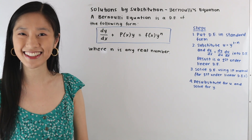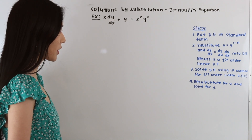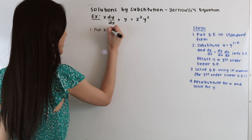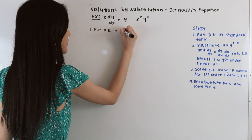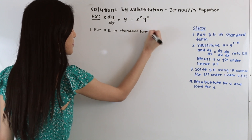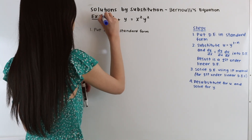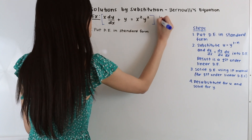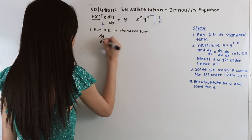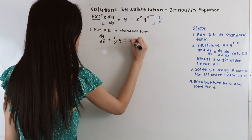So let's take a look at this example: x dy/dx plus y is equal to x squared y squared. Our first step is to put our differential equation in standard form. We multiply the entire equation by 1/x, giving us dy/dx plus (1/x)y is equal to xy squared.